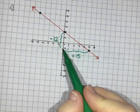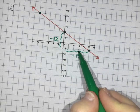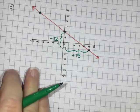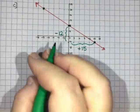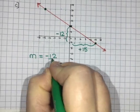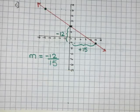Or you're welcome to count by 3 so 3, 6, 9, 12, 15 if you want to do it that way. So the slope of this line is negative 12 over 15.